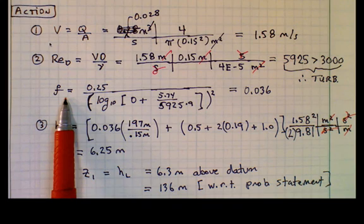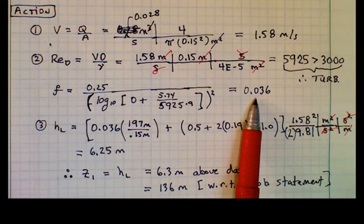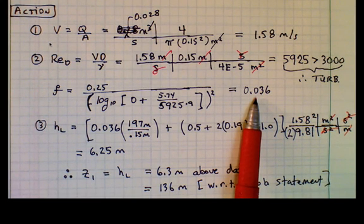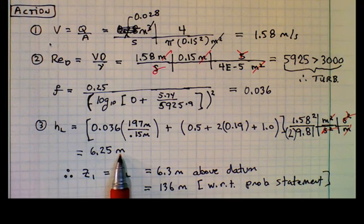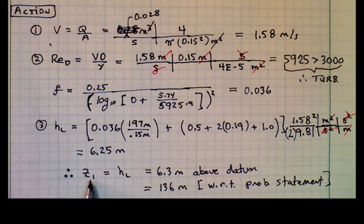Therefore, use the Swamijain correlation and calculate a resistance or a friction factor of 0.036. And lastly, we can calculate the head loss of 6.25 meters.